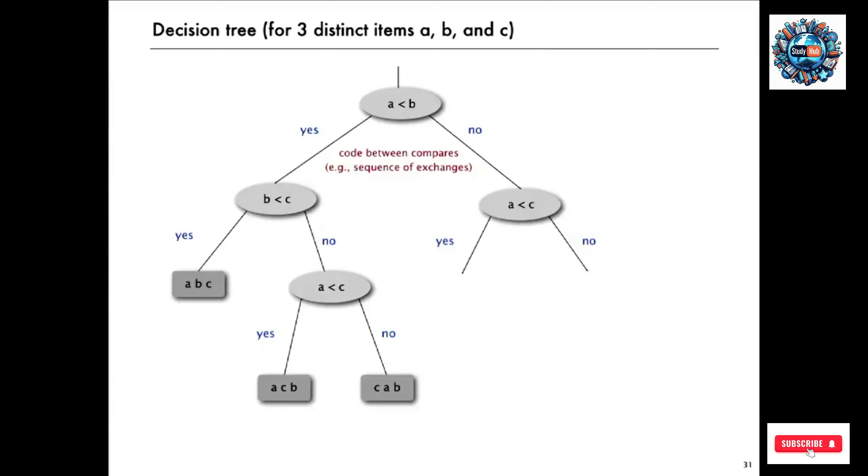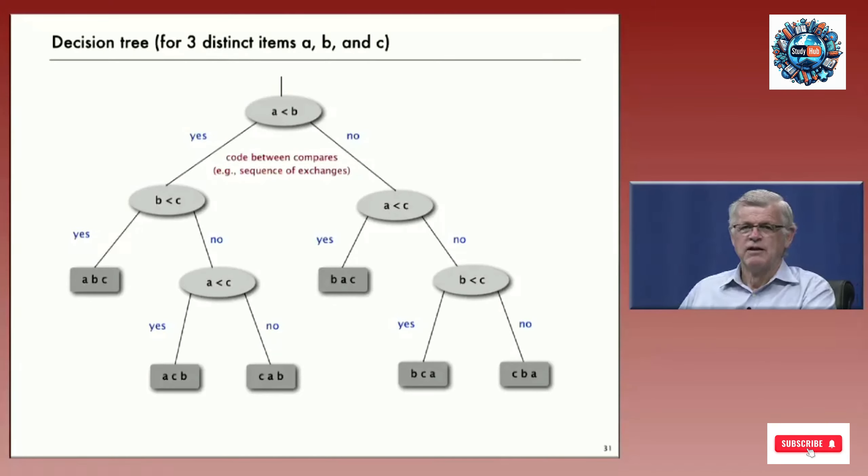And continuing on the right, perhaps the next compare is A less than C. And maybe if C is less than A, another compare B less than C. So in this case, if you go from top to bottom in the tree, with three compares at most, you can determine the ordering of the three different items. The idea of the lower bound generalizes this argument to figure out the number of compares that you need as a minimum to determine the ordering among N items.